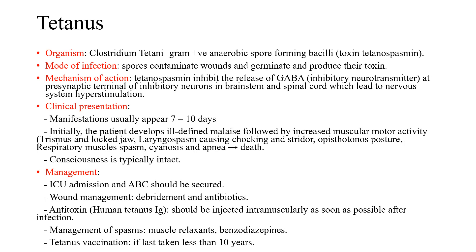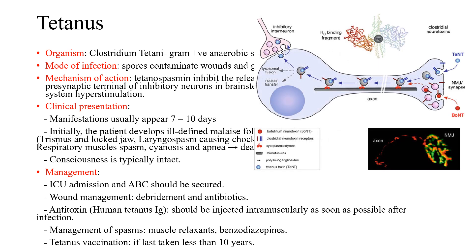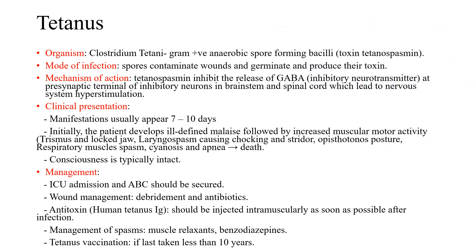A related infection is tetanus, caused by Clostridium tetani — a gram-positive anaerobic spore-forming bacillus that produces tetanospasmin toxin. Spores enter contaminated wounds, germinate and produce toxin. The toxin travels retrograde to the neuromuscular junction, then to inhibitory interneurons at the spinal cord level, causing their inhibition. Inhibition of inhibitory interneurons causes nervous system excitation, and the patient presents with the characteristic tetanus posture and severe muscle spasms. Manifestations appear within 7 to 10 days: malaise, increased motor activity, trismus, laryngeal spasm, opisthotonus position, respiratory muscle spasm, cyanosis, apnea, and death.